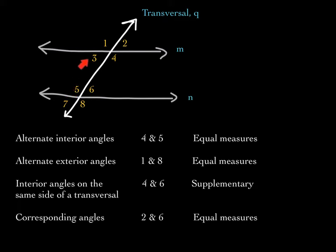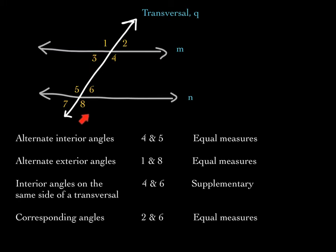Angles three and six are also alternate interior angles. Alternate exterior angles are one and eight — they are on opposite sides of the transversal and on the outside of the parallel lines, so these are equal in measure. Angles two and seven are also alternate exterior angles.